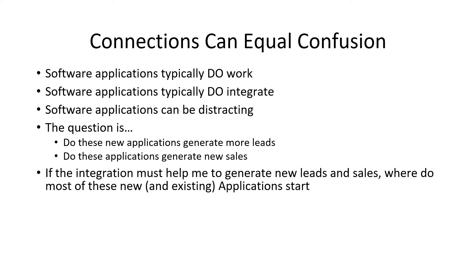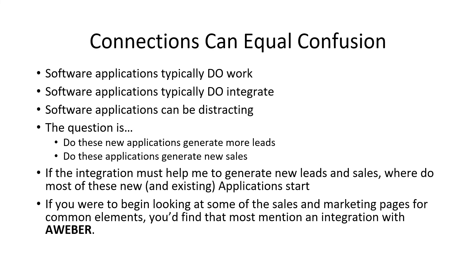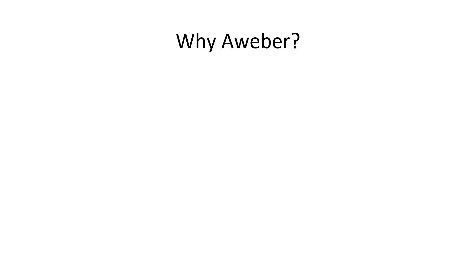Where most of these new applications start, they look to figure out what they're going to integrate with. Have you ever looked at their credibility logos? The number one logo I see on all these new applications is AWeber. If you start looking at their marketing pages and the common elements, you'll find they establish their credibility by saying, 'Hey, we integrate with AWeber' — the autoresponder company that just about every new entrepreneur and marketer has to at least make a decision about.